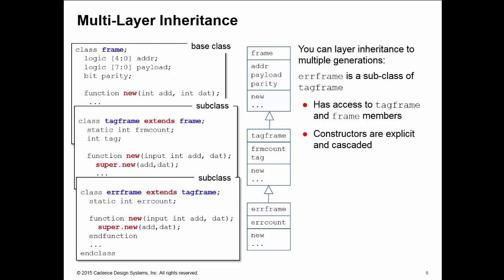I need an explicit constructor in all of my subclasses and the first line of those explicit constructors must be a super.new call to pass up the add and dat arguments up to the next level where they can be passed up eventually to my frame class. The constructors here are explicit and cascaded because I have this requirement for arguments to the constructor of my base class.